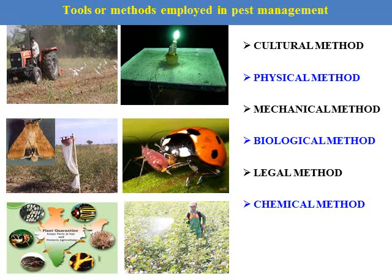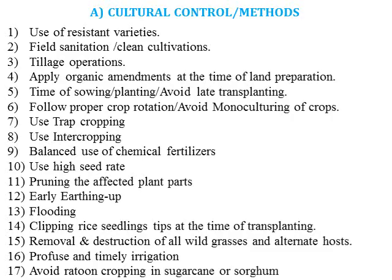These are some tools — cultural, physical, mechanical, biological, and chemical methods — which are used to prevent the attack of pests.